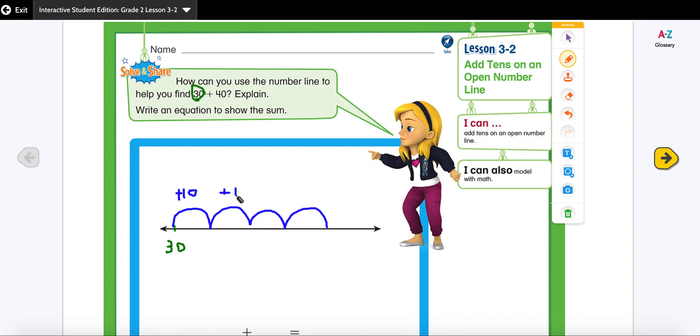So you can use the pen to write on it or you could also use the T button to place the text. Okay that's your choice how you want to do it. So I'm adding this is 30 and this is 40.